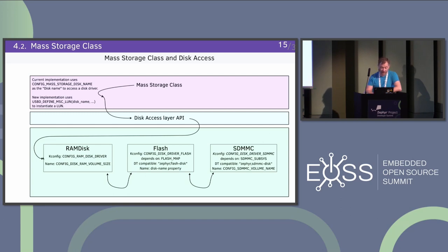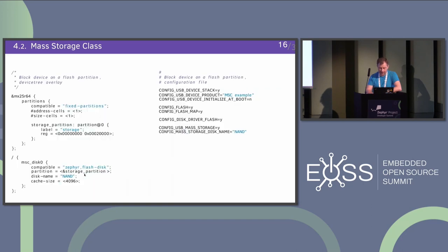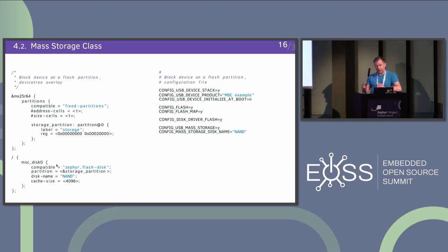We need to fix this part and probably discuss how to handle the RAM disk. For a block device on a flash partition, you actually have to describe your partition, or if you already have one defined in the board device tree, you should delete it. Be careful: if you enable this partition to be exposed to the host, make sure it's not used by another subsystem — like the settings subsystem or similar. A common mistake is configuring the flash partition for USB combined with another subsystem that also uses it, which causes a crash.